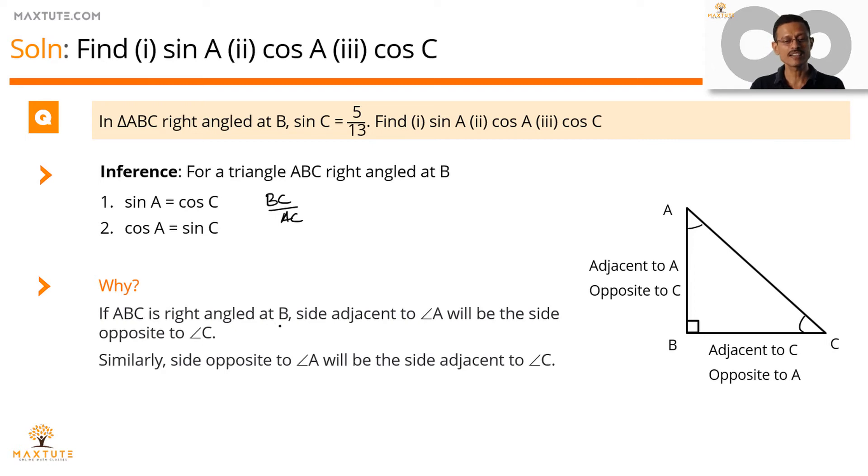The same logic works here. When we compute cos A, we needed a side adjacent to A, which happened to be equal to AB. When you're finding out sin C, the side opposite to angle C is equal to the same AB.